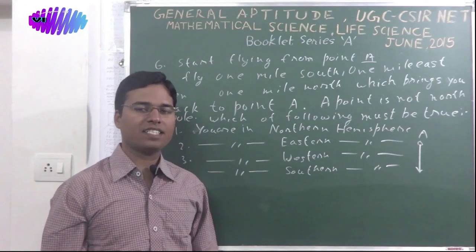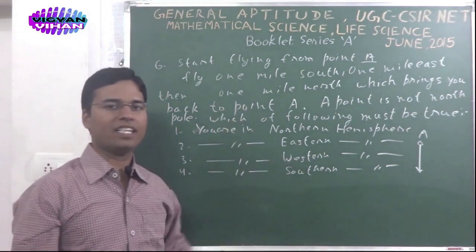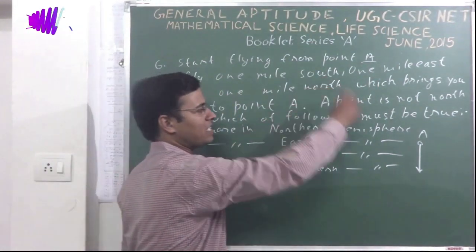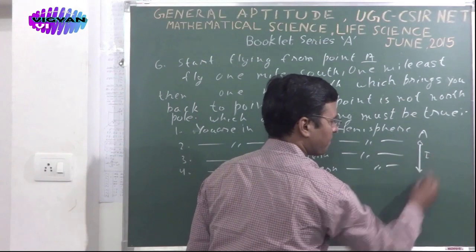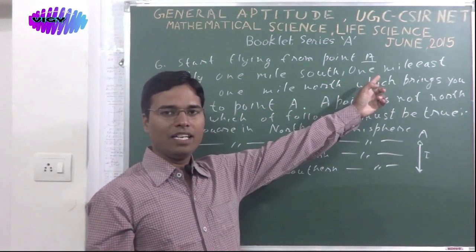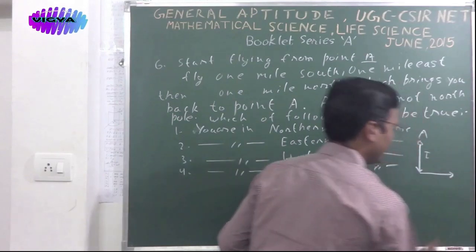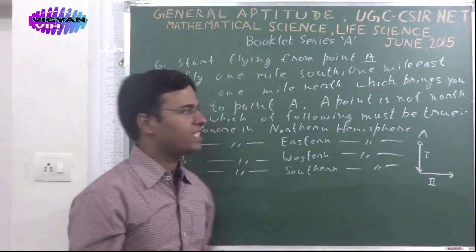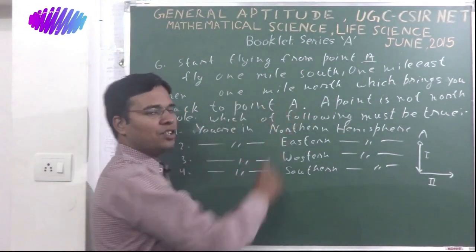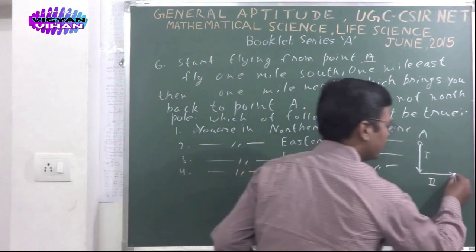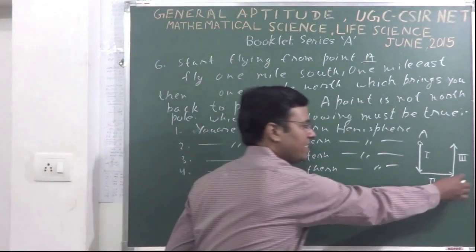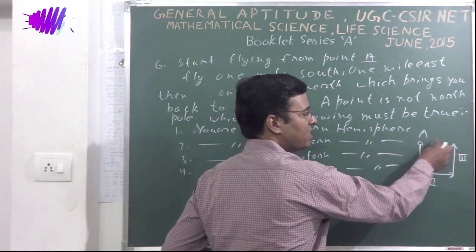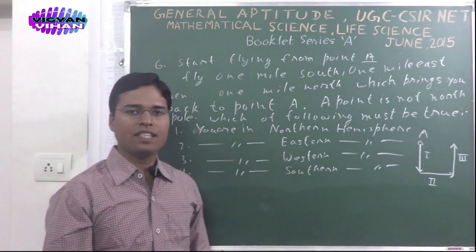Problem number 6. In the given problem, you start flying from specific point A, then fly 1 mile south in the first step, then fly 1 mile east in the second step. In a diagram you can show it like this: 1 mile east in the second step, then in the third step, 1 mile north, then it returns 1 mile north. According to the given problem, you reach at the same point A in these three steps.